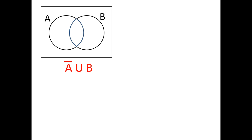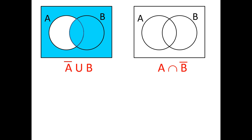For A complement union B, we want everything outside of circle A, plus everything inside circle B. So everything outside A is the blue shaded part, and then we also include everything inside B. For A intersect B complement, intersect means these two things must overlap at the same time: that's circle A overlapping with everything outside of B, leaving us one specific region.